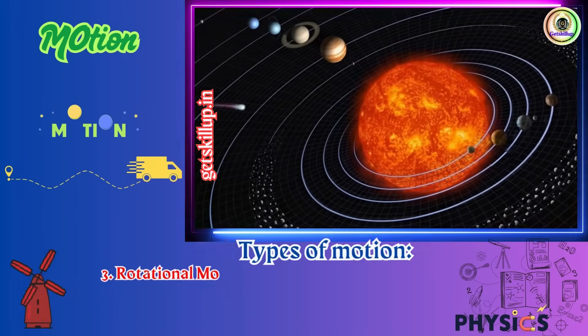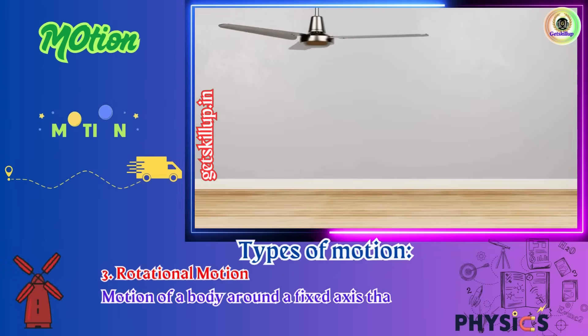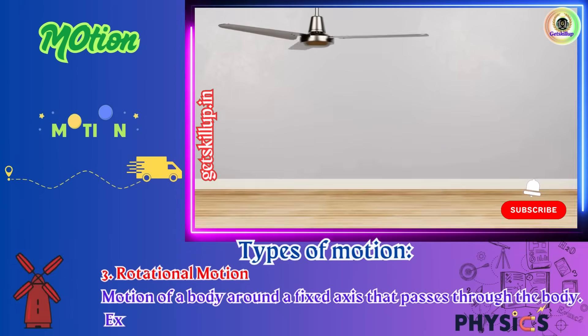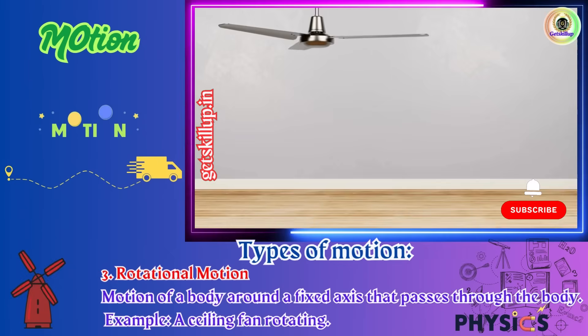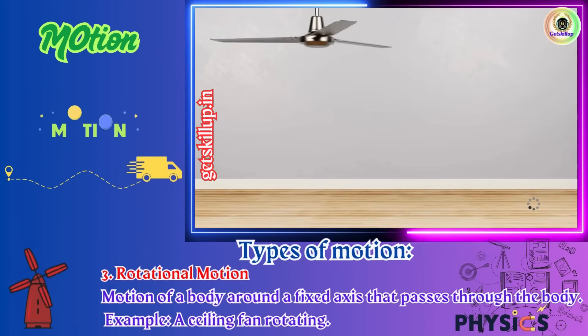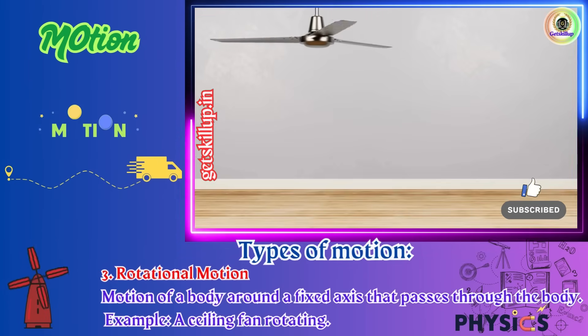Third, rotational motion, motion of a body around a fixed axis that passes through the body. Example, a ceiling fan rotating. See how the fan's blades rotate around the axis that passes right through it.